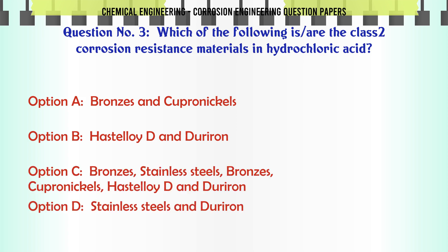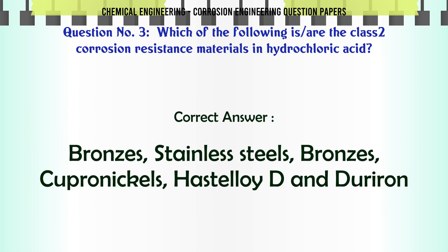Which of the following is/are the class 2 corrosion resistance materials in hydrochloric acid? A. Bronzes and cupronicels. B. Hastelloy D and Duriron. C. Bronzes, stainless steels, cupronicels, Hastelloy D, and Duriron. D. Stainless steels and Duriron. The correct answer is: Bronzes, stainless steels, cupronicels, Hastelloy D, and Duriron.